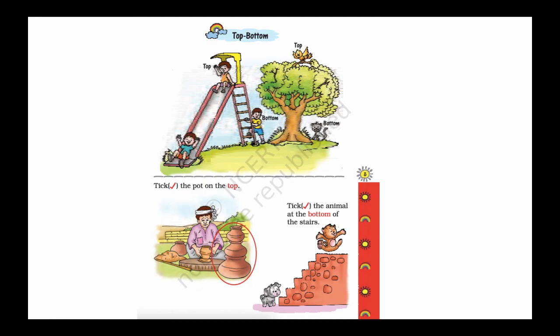Now we have another topic: top and bottom. These two terms are used for the position of an object. The boy is at the top of the slide and this boy is at the bottom of the slide. This bird is at the top of the tree and this cat is at the bottom of the tree. Top means highest point; bottom means lowest point. This pot is at the top. The puppy is at the lowest point of the stair.